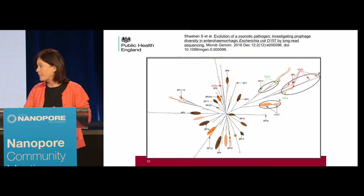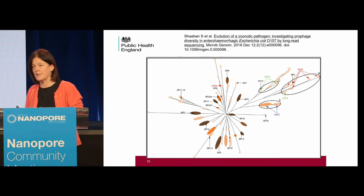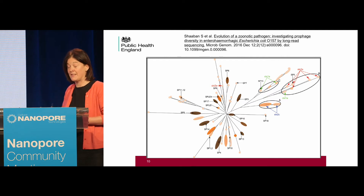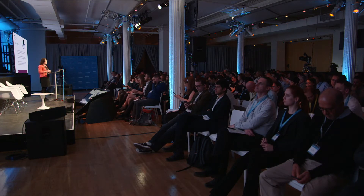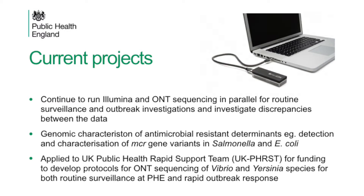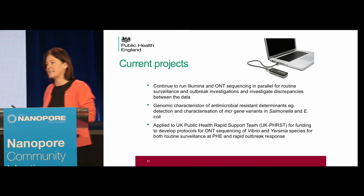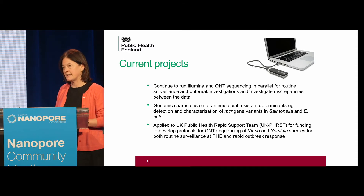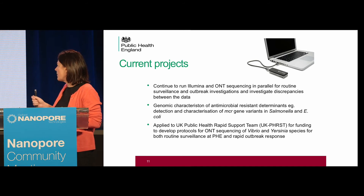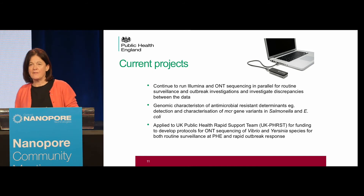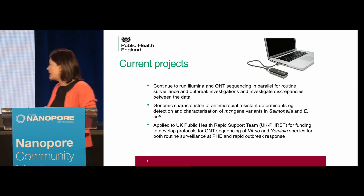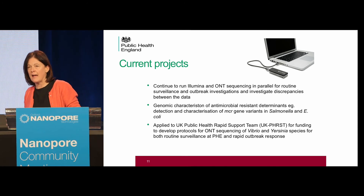This is very much a work in progress. We're collaborating with David Galley at the University of Edinburgh and Sharif Shaban, the bioinformatician at Health Protection Scotland, who have a large database of E. coli O157 prophage — we're going to interrogate their database with our strains. To summarise: we're continuing to run Illumina and ONT sequencing in parallel for routine surveillance and outbreak investigation. We're also using MinION data to characterise AMR in our enteric isolates, which is proving very helpful. And I've recently applied for funding to develop protocols for sequencing Vibrio and Yersinia, both for routine surveillance at PHE and for rapid outbreak response to cholera and plague outbreaks.